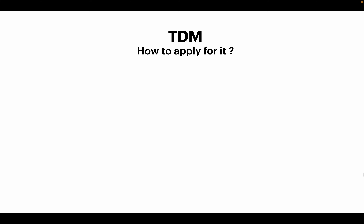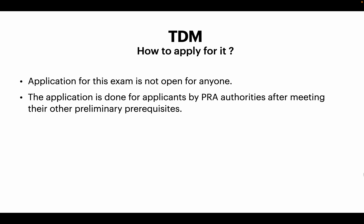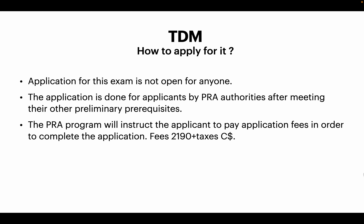How do you apply for this test? This test is not open for anyone to book directly. The application is done on the applicant's behalf by the Practice Readiness Assessment authorities after meeting all preliminary prerequisites. The authority in each province that conducts the practice readiness assessment will make an application on the applicant's behalf, and they will instruct the applicant to pay the application fees, which is usually $2,190 Canadian dollars plus taxes.